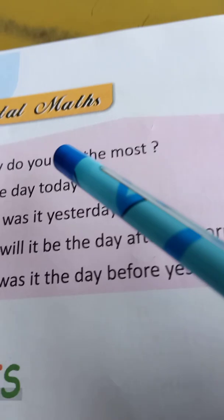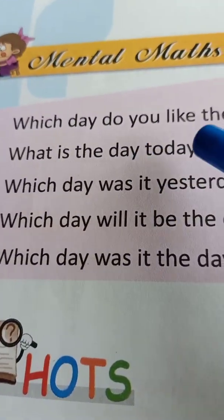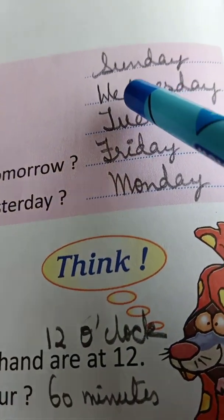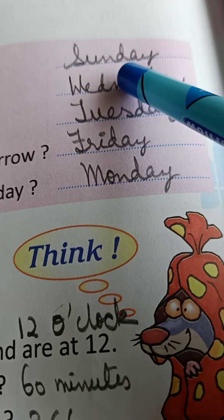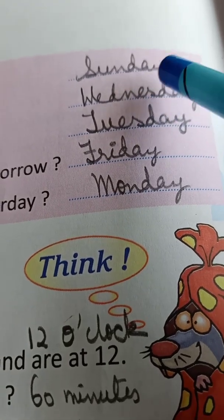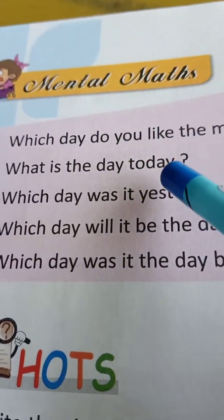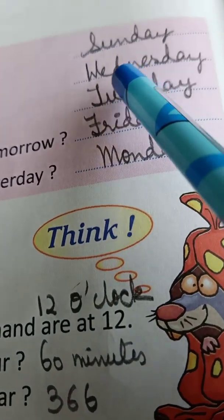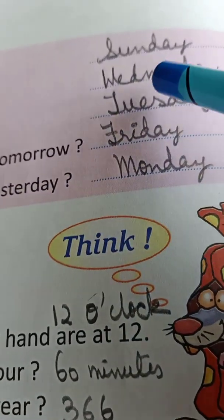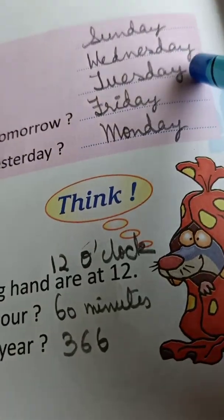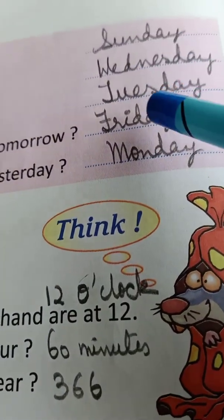Mental maths, page 182. Which day do you like the most? Your teacher likes Sunday the most — I hope you also like Sunday. You can write any day; I have written Sunday. What is the day today? I have written Wednesday because today is Wednesday. Which day was it yesterday? Today is Wednesday, so yesterday was Tuesday.